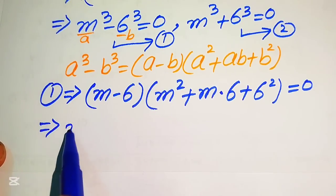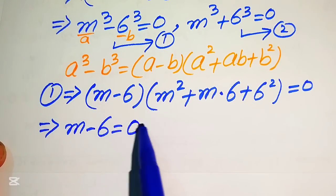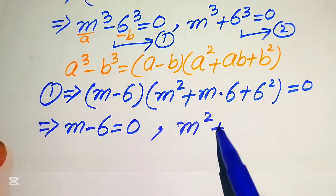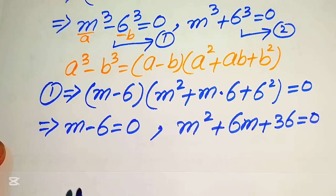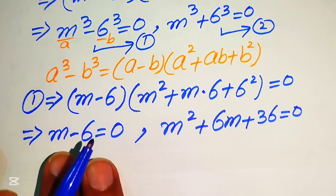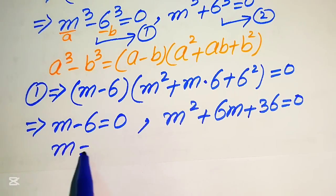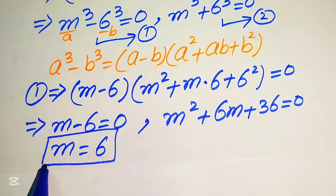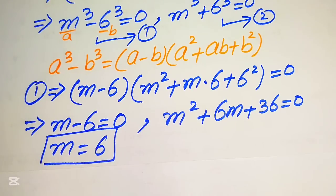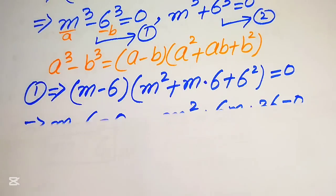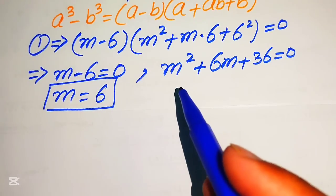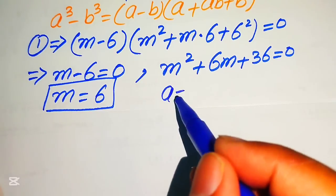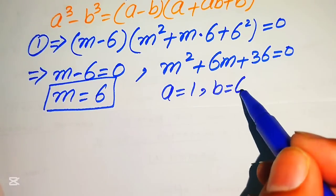We divide this into two cases. The first case gives m minus 6 equals to 0, so m equals to 6 — this is the first real root of the given equation. The second case gives the quadratic m squared plus 6m plus 36 equals to 0. To find the other roots we solve this quadratic equation, identifying coefficients: a equals 1, b equals 6, and c equals 36.